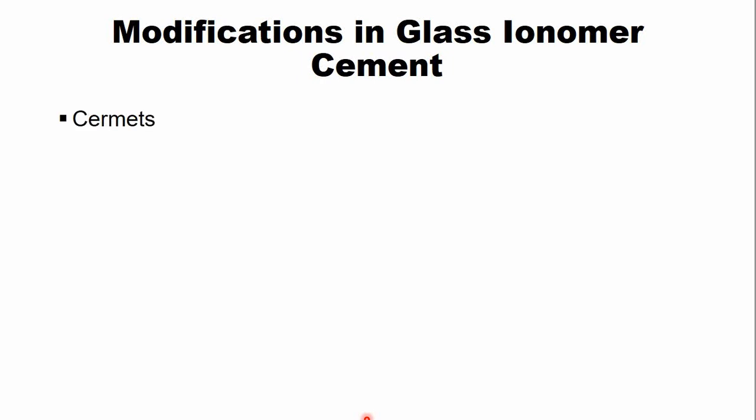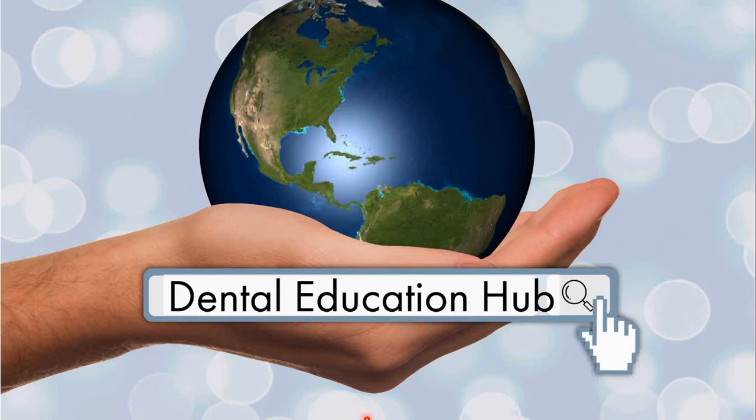There are some modifications of glass ionomer cements. The first is cermets — a metal-reinforced glass ionomer cement in which metal particles are added. The second popular modification is the resin-modified glass ionomer cement. These modifications will be discussed in upcoming lectures. Thank you very much for watching this lecture. Please give us your feedback in the comments, give us a thumbs up, and share it with your friends.